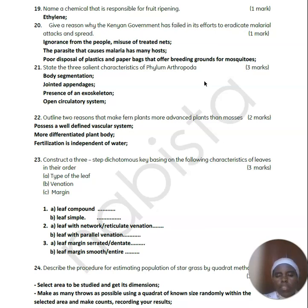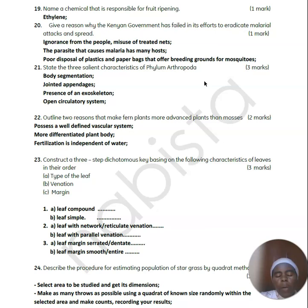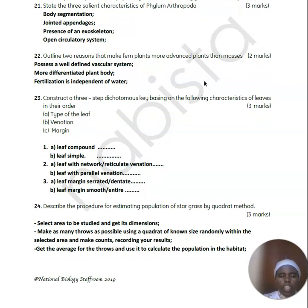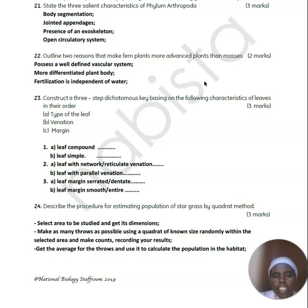Reasons why the Kenyan government has failed to eradicate malaria include ignorance — people do not use mosquito-treated nets — the parasite that transmits malaria has many hosts, and there is lack of proper disposal of paper bags and plastics that act as breeding places for mosquitoes. Three characteristics of phylum Arthropoda: arthropods have jointed appendages, their bodies are segmented, they have an exoskeleton, and they have an open circulatory system. These are common to arachnids, insects, and crustaceans.